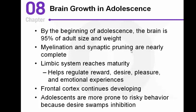Synaptic pruning means getting rid of connections that are not being used, making the brain more efficient in processing. The limbic system reaches maturity and plays a role in emotions, reward, and pleasure. However, the frontal cortex continues developing — it's thought the frontal lobe doesn't fully develop until around age 25. The frontal lobe handles decision making, thought processes, and personality, which may be why we see some poor decision making in teenagers. Part of that is the underdeveloped frontal lobe, and part is lacking the wisdom gained from more life experience.